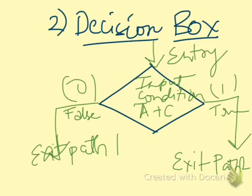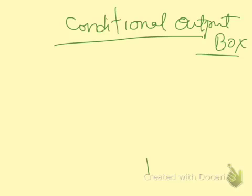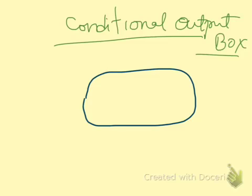Now let us see how a conditional output box works. Conditional output box is that box which is specific to the algorithmic state machine. You don't really find this in your actual flowchart for the programming languages. The conditional box looks like this, which is a rectangle with rounded corners. It is a rectangle with rounded corners and you have entry from the top and exit from the bottom.